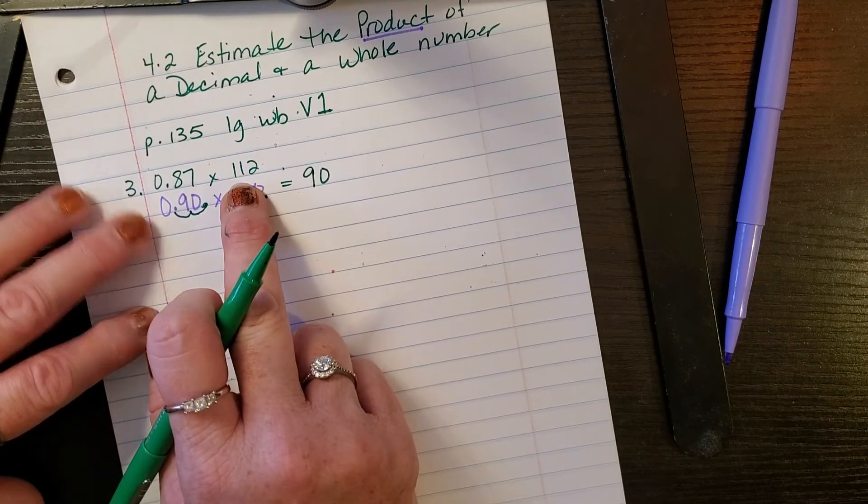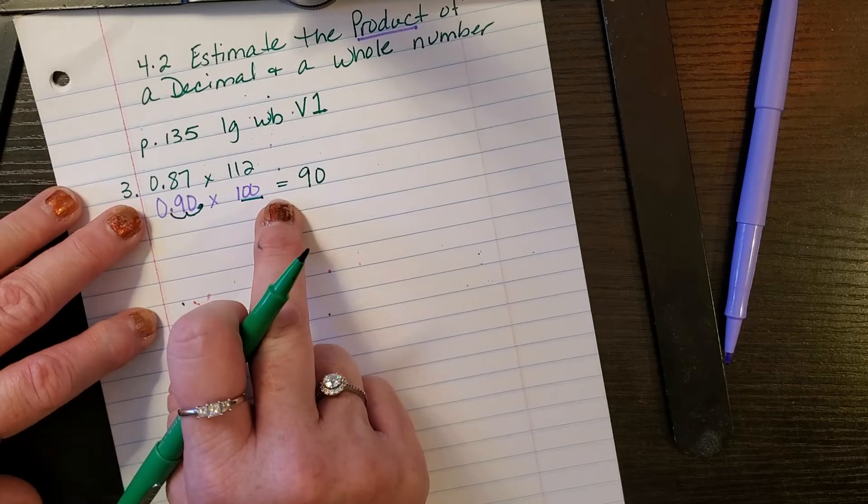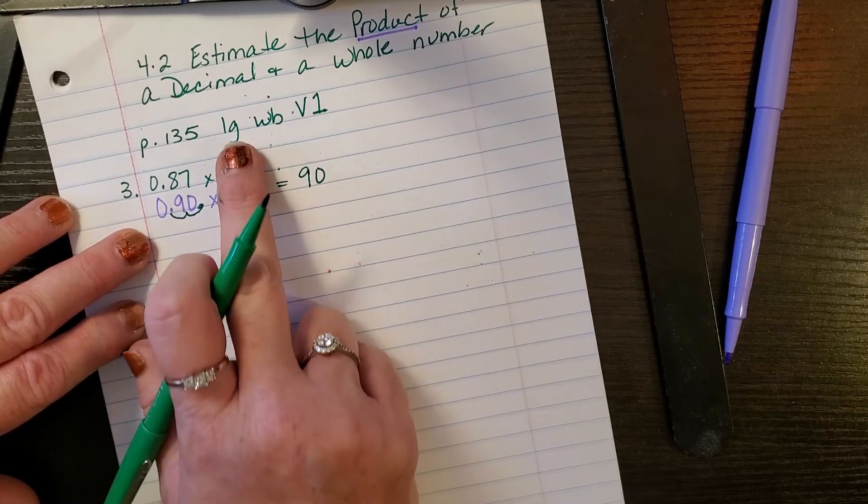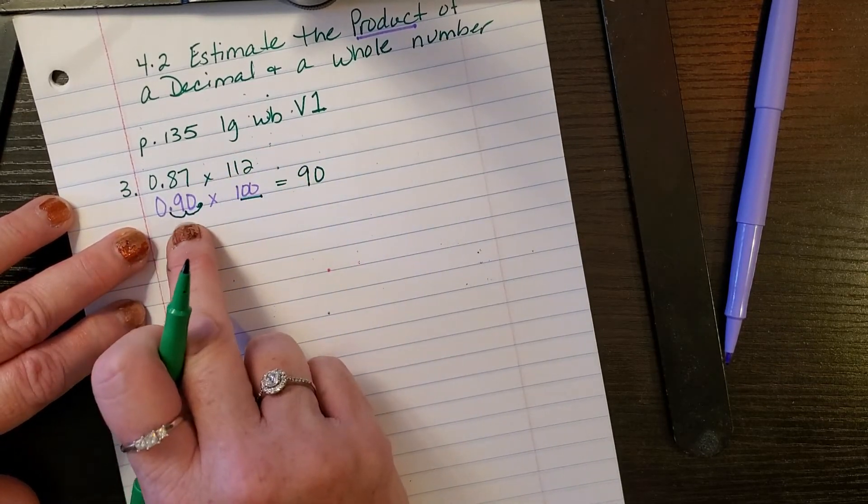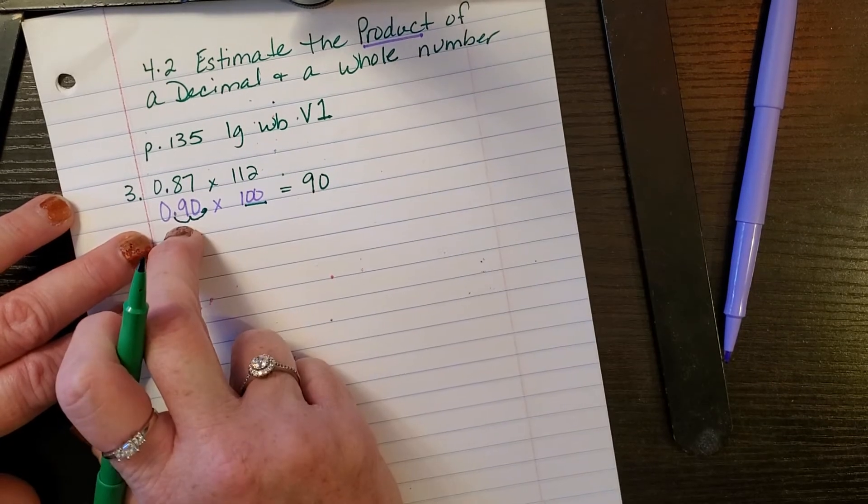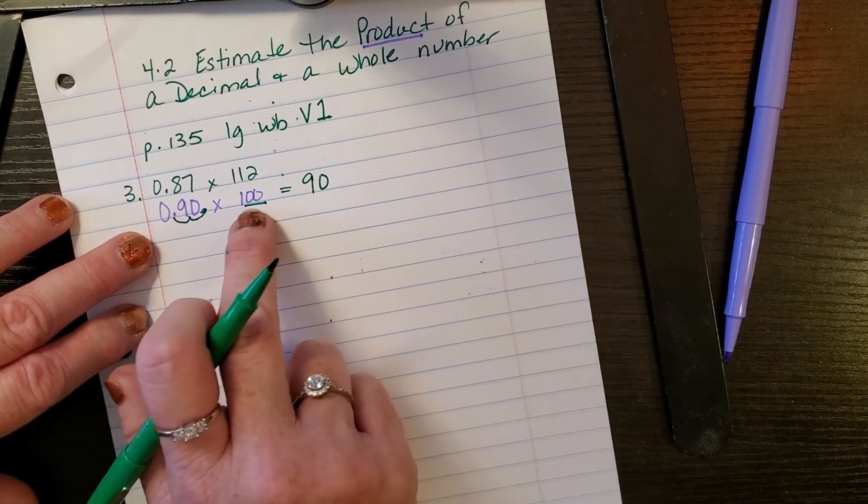So I know how to jump this decimal. So is 112 close to 100? I'm sure it is. And then the number of zeros here tells me how many times I need to jump my decimal place. So the answer to this would be 90.